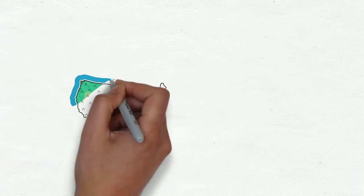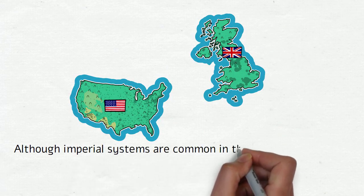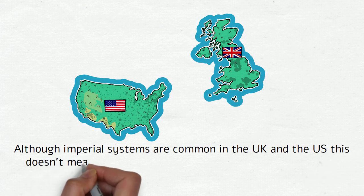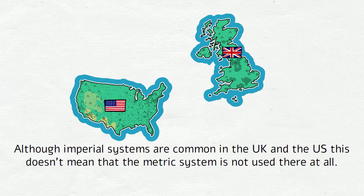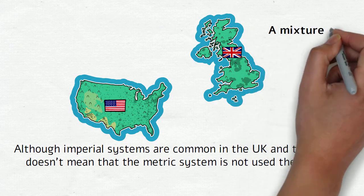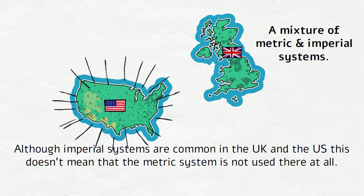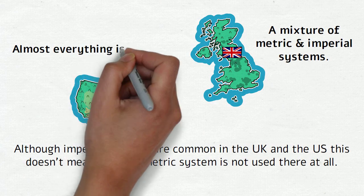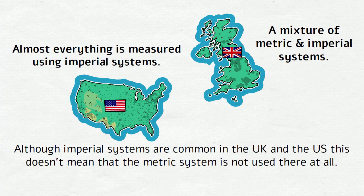The last thing we need to mention is that although imperial systems are common in the UK and the US, this doesn't mean that the metric system is not used there at all. In the UK, for example, you will find a mixture of metric and imperial systems in use, whereas in the US, almost everything is measured using imperial systems only with some exceptions.